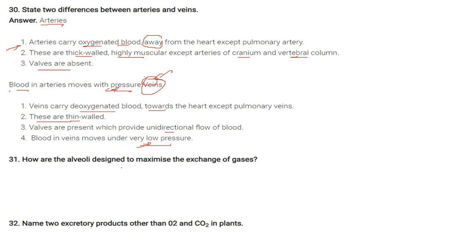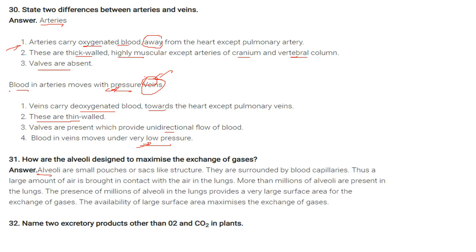How are the alveoli designed to maximize the exchange of gases? Alveoli are balloon-like, bag-like structures surrounded by blood capillaries, bringing a large amount of air into contact with the blood. More than millions of alveoli are present in the lungs, providing a very large surface area for gas exchange. This large surface area maximizes the exchange of gases.